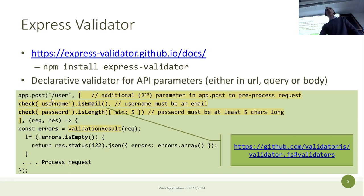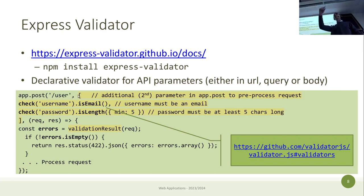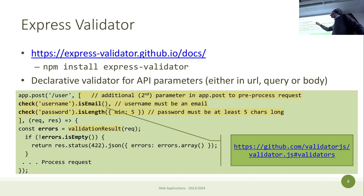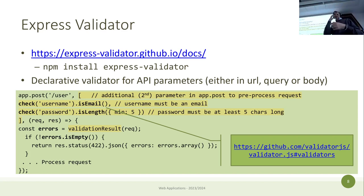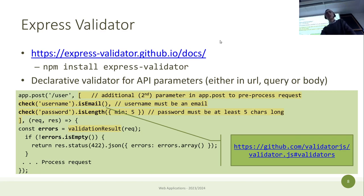In Express, the first parameter is always the URL, the last parameter is always the callback in which you execute the code, and everything in the middle is middleware — there can be more than one. Express checks the type of the parameters you pass in the middle: if it is an array, it checks what's inside and runs the validators. Everything is embedded into Express, which is quite flexible — that's why we use Express and not the internal HTTP web server of Node, which is much less flexible.